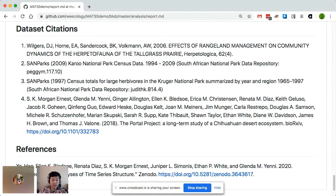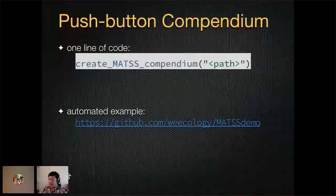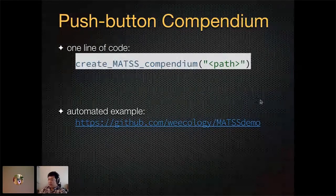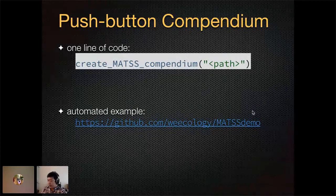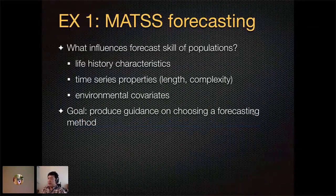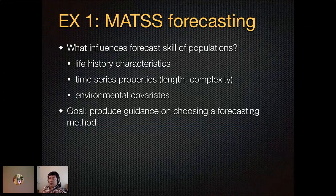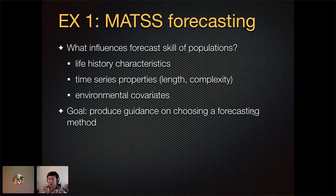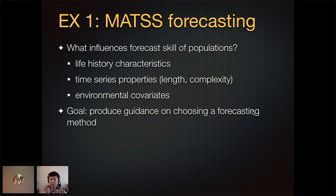So let me go back to my talk. We have that automated example, and you can click through and see what that looks like. We are actually using MATS currently in several different kinds of projects, both internal and external collaborations in the lab. One example is to explicitly study forecasting and what influences the forecast skill of populations — testing different hypotheses about whether life history characteristics, time series properties, or environmental covariates influence forecast skill, with the idea of producing general guidance on how to choose a good forecasting method.